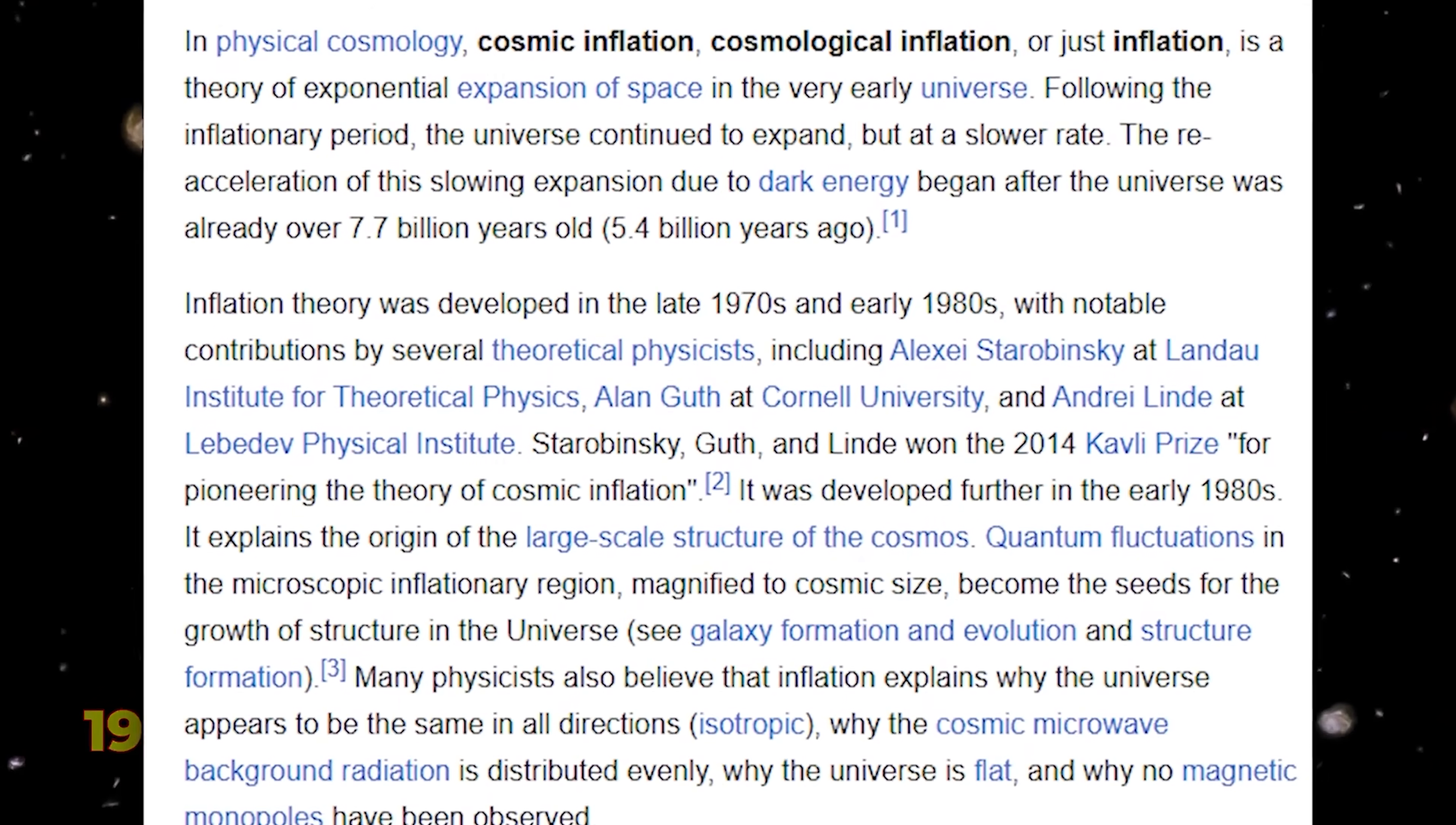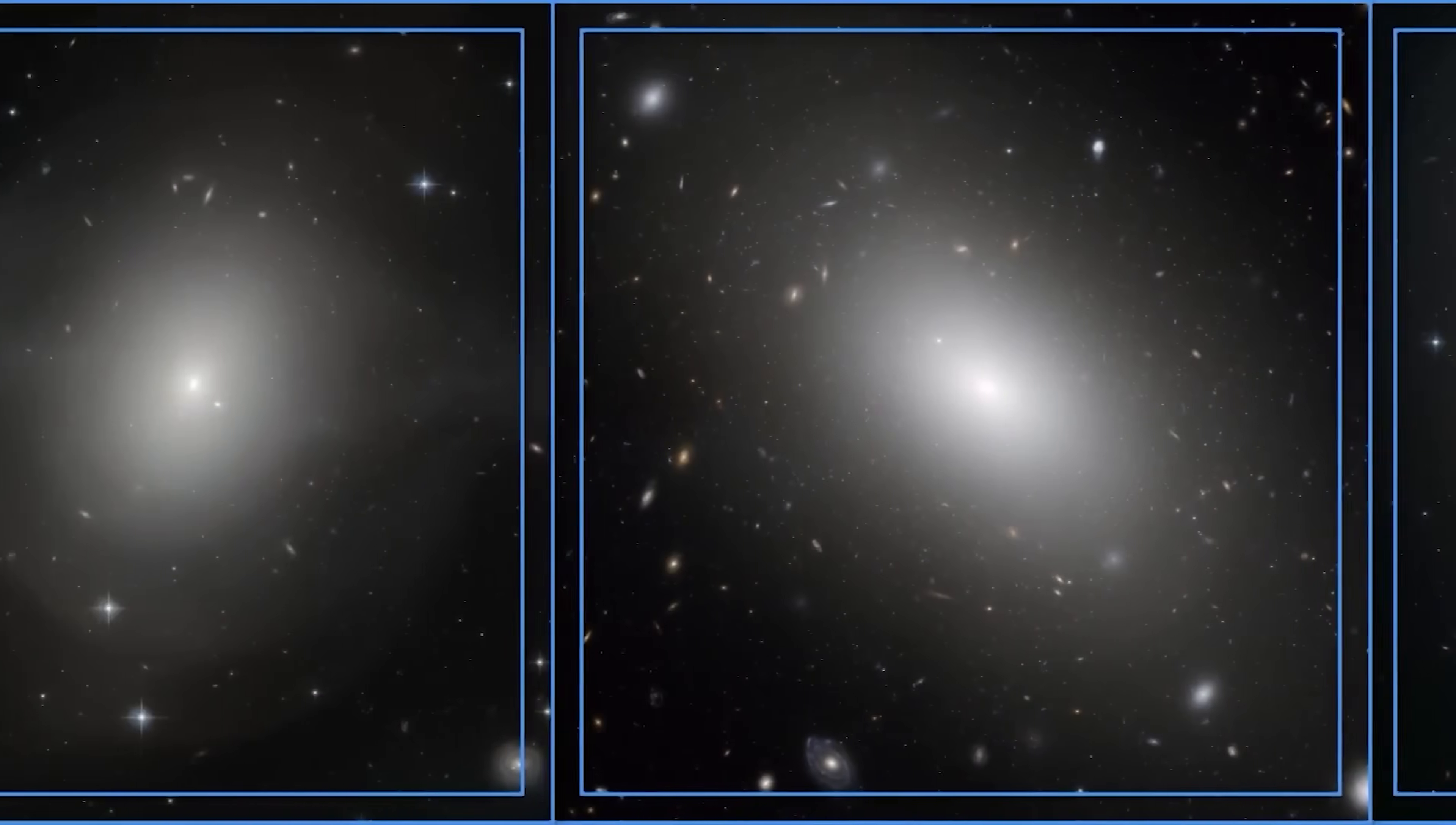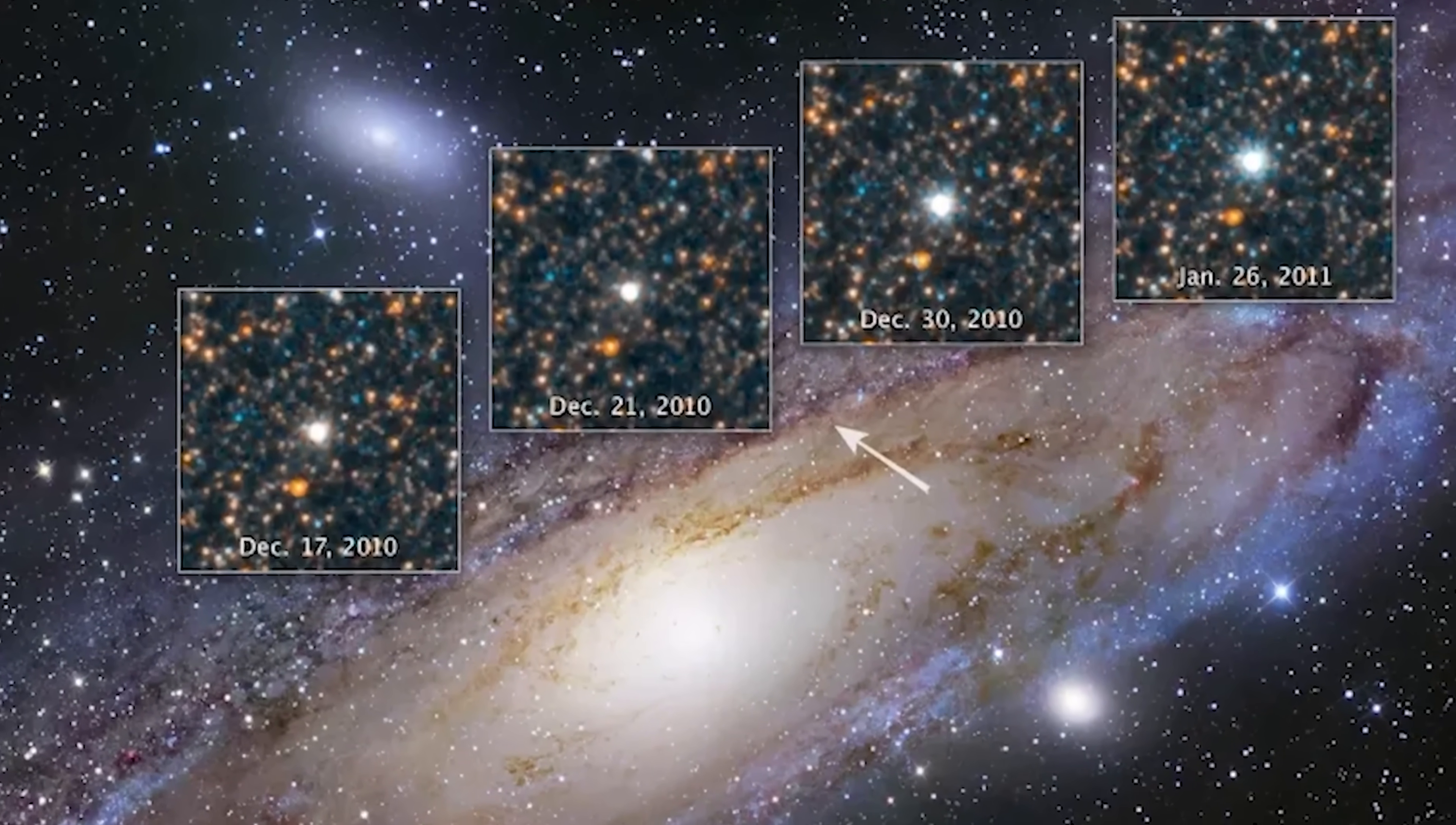Later, in the 1980s, the theory of inflation was added, suggesting the universe underwent a burst of exponential expansion right after the Big Bang, creating the large-scale uniformity we see in the cosmic microwave background. But now, more and more evidence points to matter being far less evenly distributed across space than these models predict.